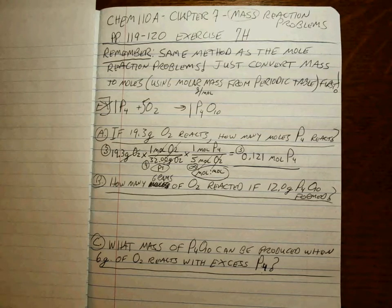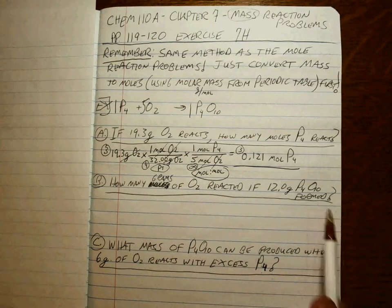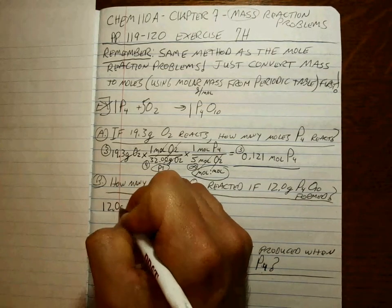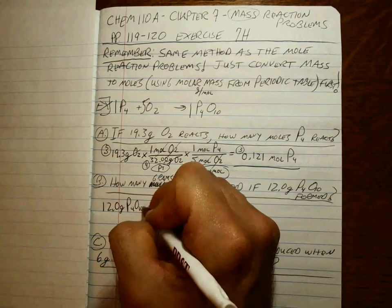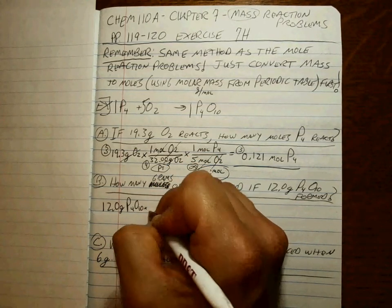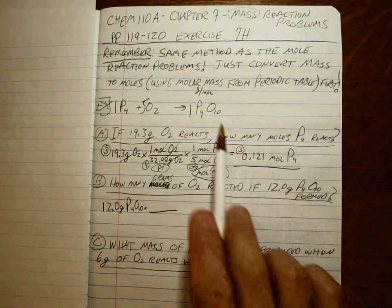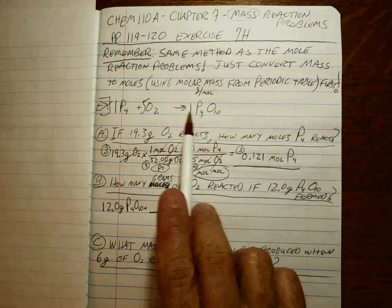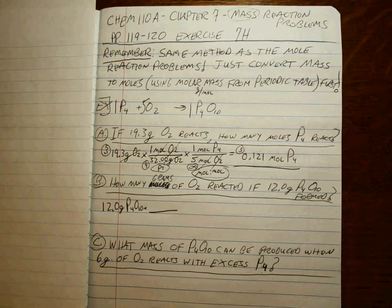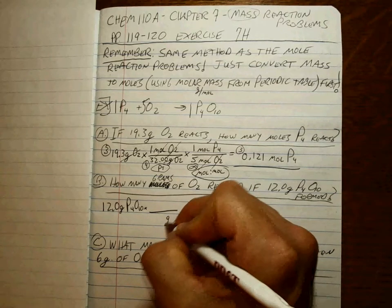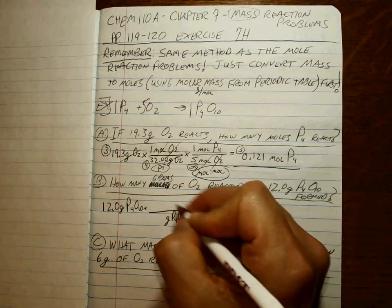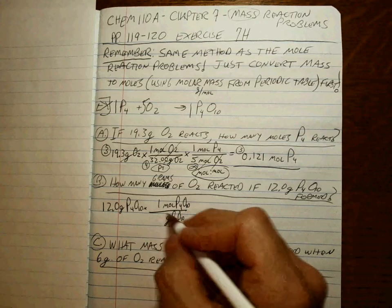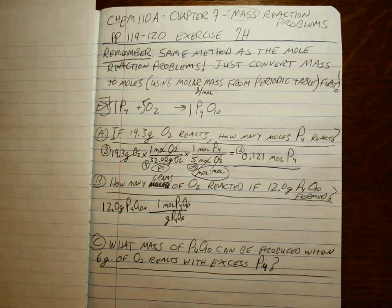So you've got to do whatever you have to do to get to moles. For these problems, we're starting with grams again. 12.0 grams, P4O10 this time. Well, the only way you compare that stuff to that stuff is through the mole-to-mole ratio. So you have to convert this to moles first. Grams of P4O10 for every one mole P4O10.